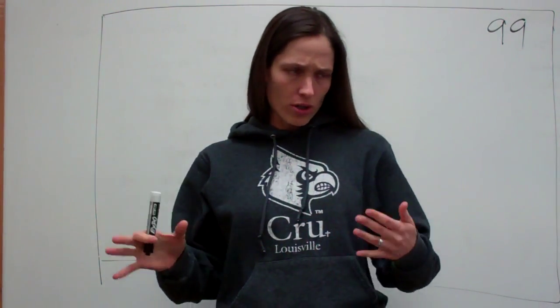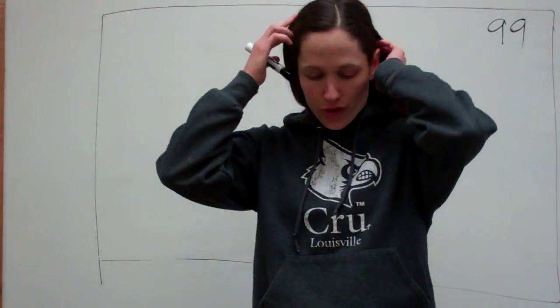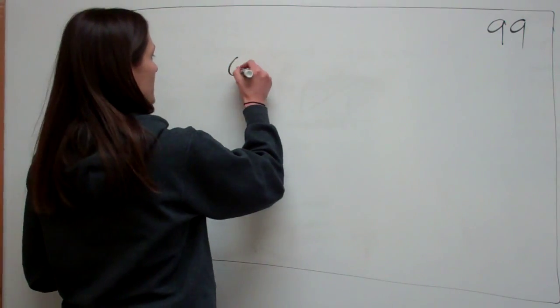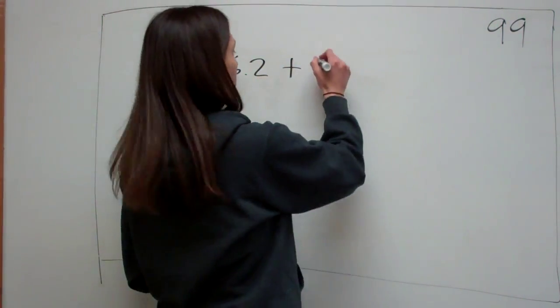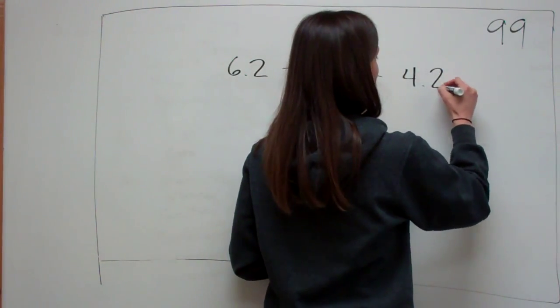This shouldn't be too hard. You've probably learned this a little bit already. For example, they tell me to add 6.2 plus 3 plus 4.25.